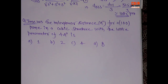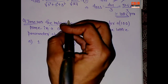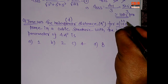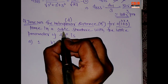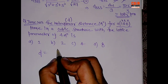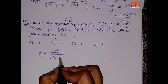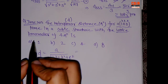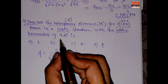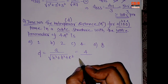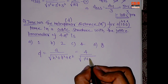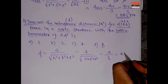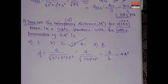The second question is again based on interplanar distance. The plane given is (100), so hkl = 1, 0, 0. The structure is cubic, so d = a / √(h² + k² + l²). The lattice parameter a is given as 4 Ångströms. So d = 4 / √(1² + 0² + 0²) = 4 / 1 = 4 Ångströms. Option C is correct.